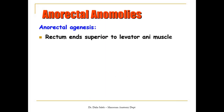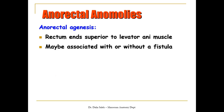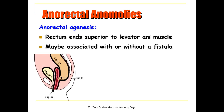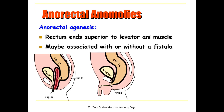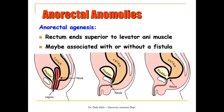There is also anorectal agenesis, in which the rectum ends superior to the level of the levator ani muscle. In this condition there is a fistula between the rectum and the vagina, or between the rectum and the urethra, or between the rectum and the urinary bladder.